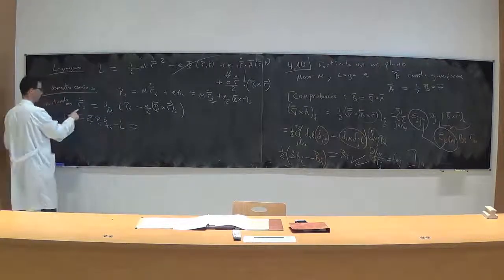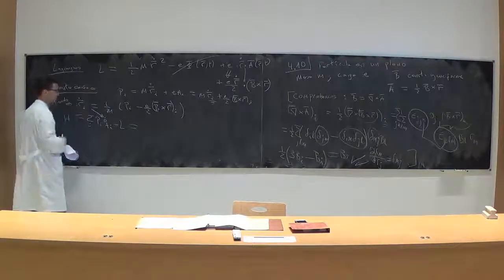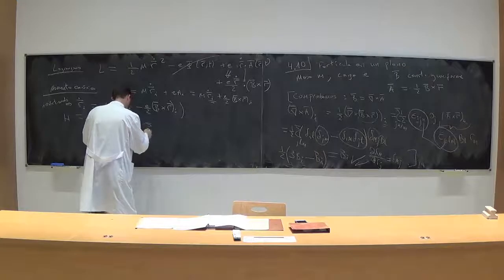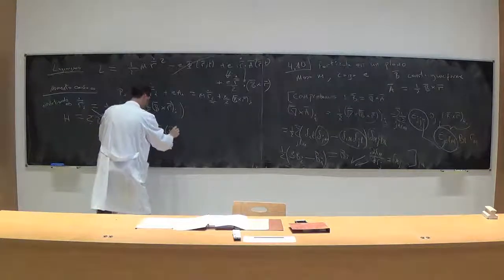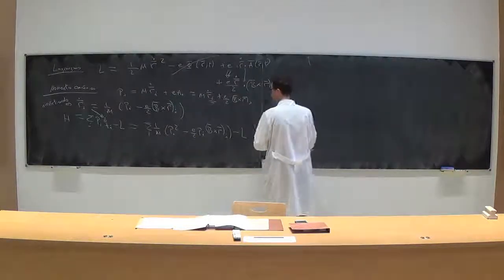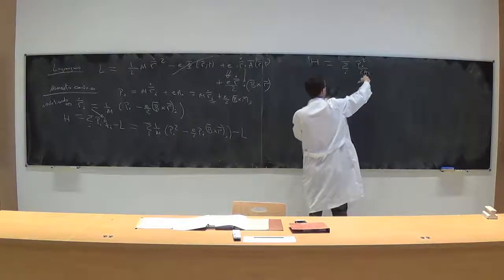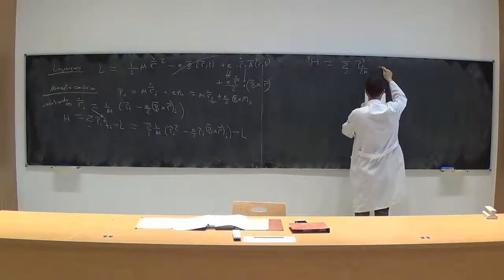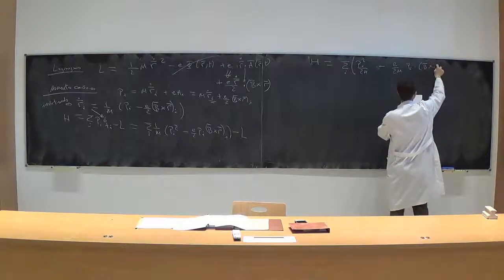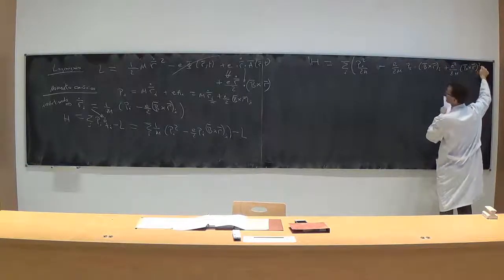El hamiltoniano H = P_i·Ṙ_i − L, sustituyendo Ṙ en función de P, resulta en: H = Σ_i P_i²/(2M) − (E/2M)·P_i·(B × R)_i + E²/(8M)·(B × R)_i². El hamiltoniano no depende explícitamente del tiempo, por tanto se conserva. Sin embargo, no coincide con lo que llamaríamos la energía de la partícula, ya que los campos magnéticos no contribuyen a la energía, solo curvan trayectorias.